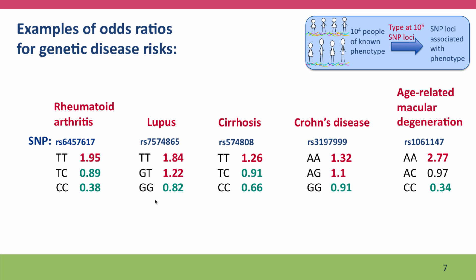Here are more examples of odds ratios for genetic disease risks. For lupus and rheumatoid arthritis — a different SNP with T and C alleles — one genotype is associated with high risk while the other two are associated with low risk; in this case, the heterozygote has lower than average risk. For cirrhosis, having two T alleles increases risk while the other genotypes reduce it. For Crohn's disease, the A allele increases risk, the G allele reduces it, and heterozygotes have a slightly higher risk.